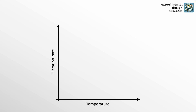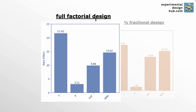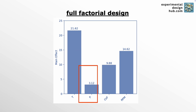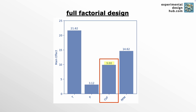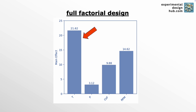First of all, we're going to look at the average contribution of all the factors individually. In DOE language, those effects are called main effects. The full factorial design tells us the true effect — there is no overlapping or aliasing whatsoever. We can see that increasing the temperature from low to high increases the filtration rate by an average of 21 points. Pressure increases it by 3.1 points, concentration by 9.9 points, and stirring rate by 14.6 points. Pressure has almost no effect, while temperature has the highest effect on the filtration rate.